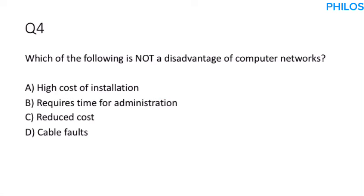Question four: Which of the following is not a disadvantage of computer networks? All the options are disadvantages except one. The correct answer is option C: reduced cost. Reduced cost is an advantage, that is why it is not a disadvantage.